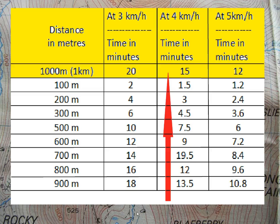Here is a useful chart which I have drawn up to show the length of time it takes to walk distances at various rates of speed. So the distance of 1km at 3km per hour takes 20 minutes, at 4km per hour takes 15 minutes, and at 5km per hour takes 12 minutes. And in subdivisions, a distance of 100 metres at 4km per hour is 1.5 minutes. This is the level of detail that we are going to need.